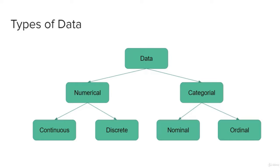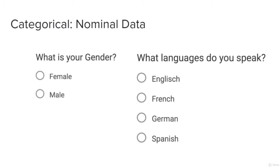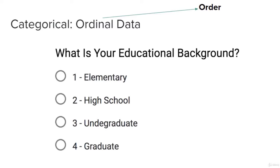A data type can be mainly of two types: numerical and categorical. Numerical can be further divided into continuous and discrete, and categorical can be divided into nominal and ordinal. Categorical nominal data, as the name implies, is about categories. For example, in survey forms with questions like 'What is your gender?' or 'Which language do you speak?' — the answers are mutually exclusive, with no intermediate relation between options like English, French, German, or Spanish.